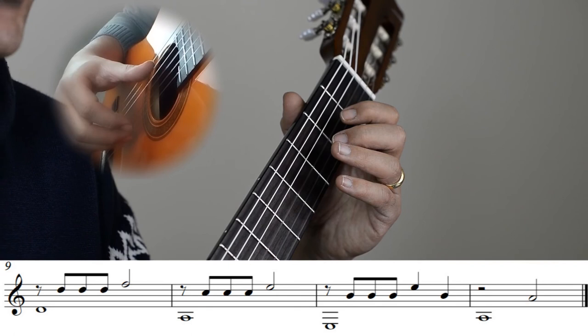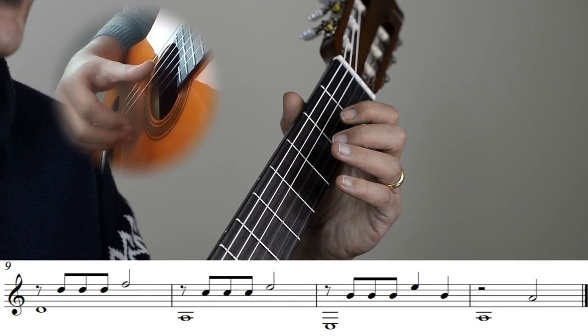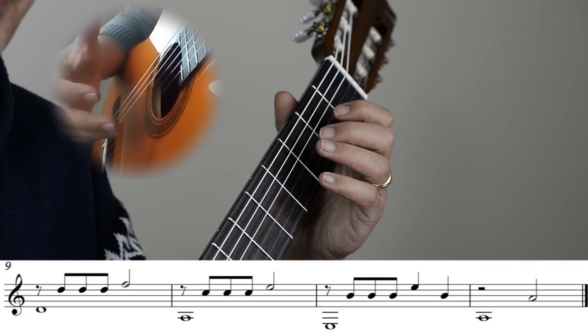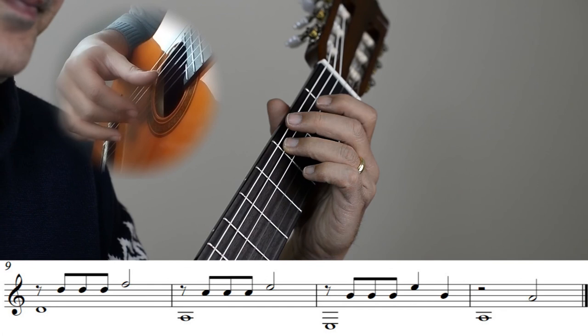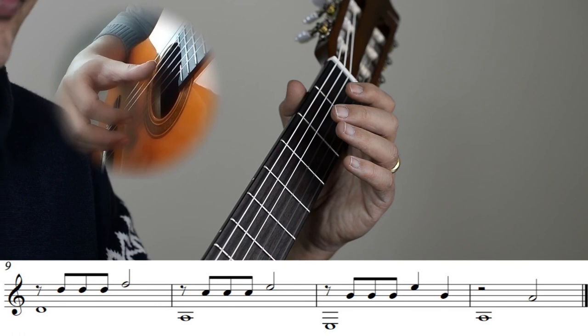Take your time with this one. If 80 beats per minute is too fast for you, you can start on 60 or even 50. The important thing is to keep the timing correct: 1 and 2 and 3 and 4 and. And then gradually increase the speed.